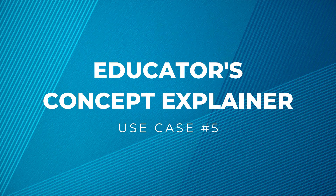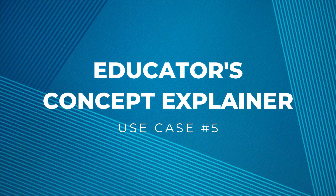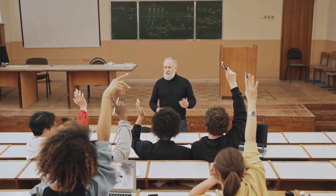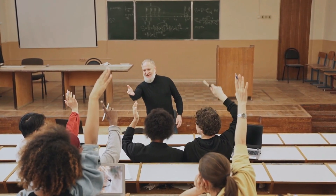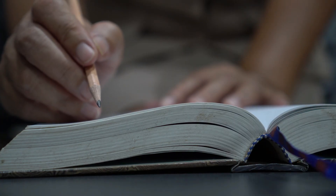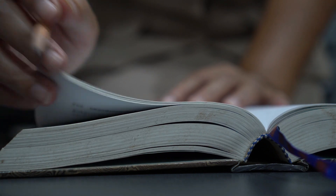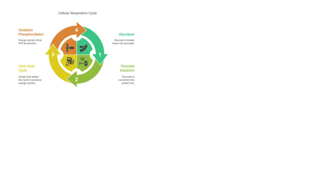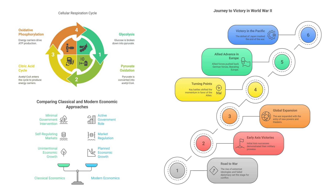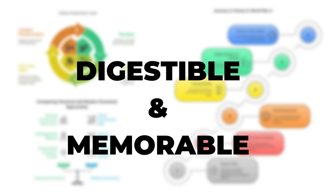Fifth, the Educator's Concept Explainer. For teachers, professors, and trainers, explaining abstract or complex concepts is a constant challenge. Napkin AI can transform a dense paragraph from a textbook — on a scientific process like cellular respiration, a historical event, or an economic theory — into a visual that makes the information more digestible and memorable for students.